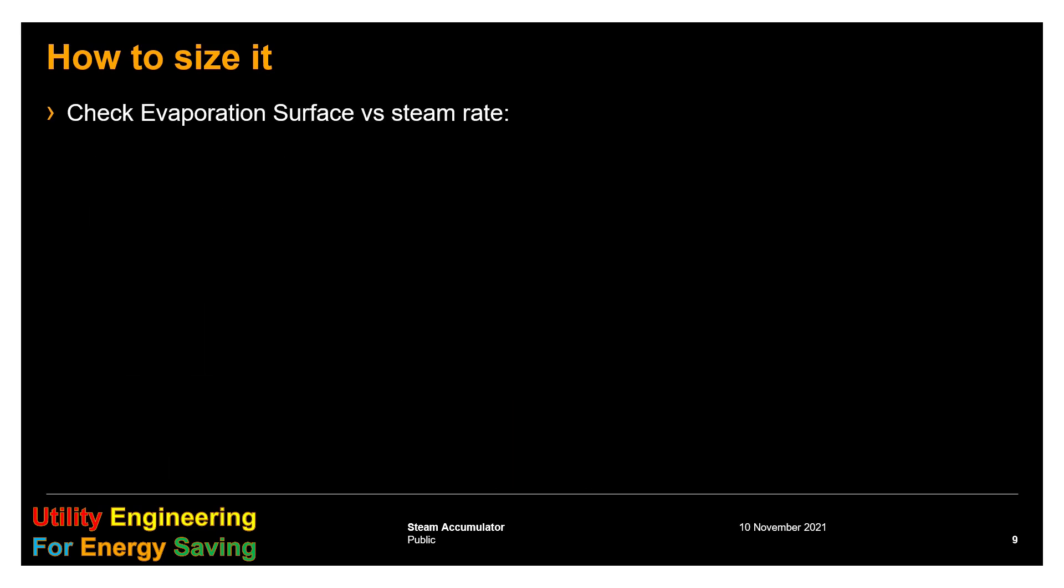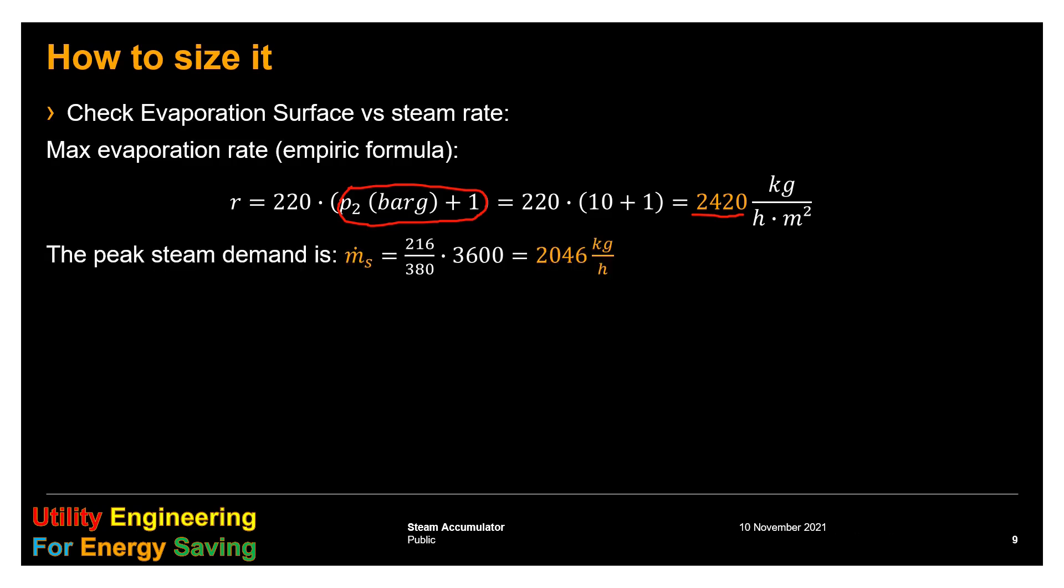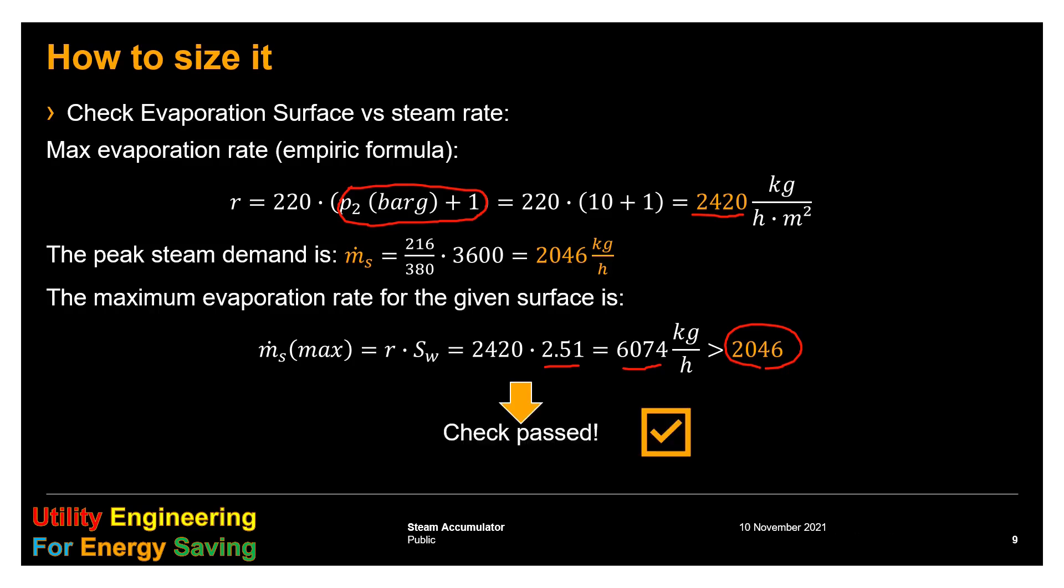We need to check if the evaporation surface is enough. We use an empirical formula, where R being the product of an empirical factor 220 times the absolute pressure in bar is 2,420 kg per square meter per hour. Our peak demand is 216 kg divided by 380 seconds times 3600, the conversion factor, that is 2,046 kg per hour. The maximum evaporation rate for the given surface is R times the evaporation surface, 2,420 times 2.51, which is 6,074 kg per hour, that is bigger than what is required by our process. Therefore, the check is passed.